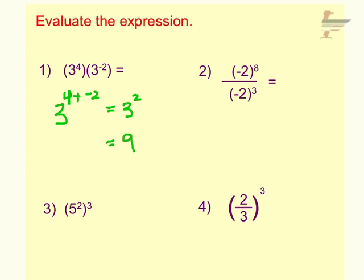Number two: we're dividing the same base, so when you're dividing the same base you keep your same base of 2 and the property tells us that we will subtract our exponents, so we end up with negative 2 to the fifth power. Negative 2 to the fifth power means you're multiplying negative 2 times itself five times — that ends up with negative 32.